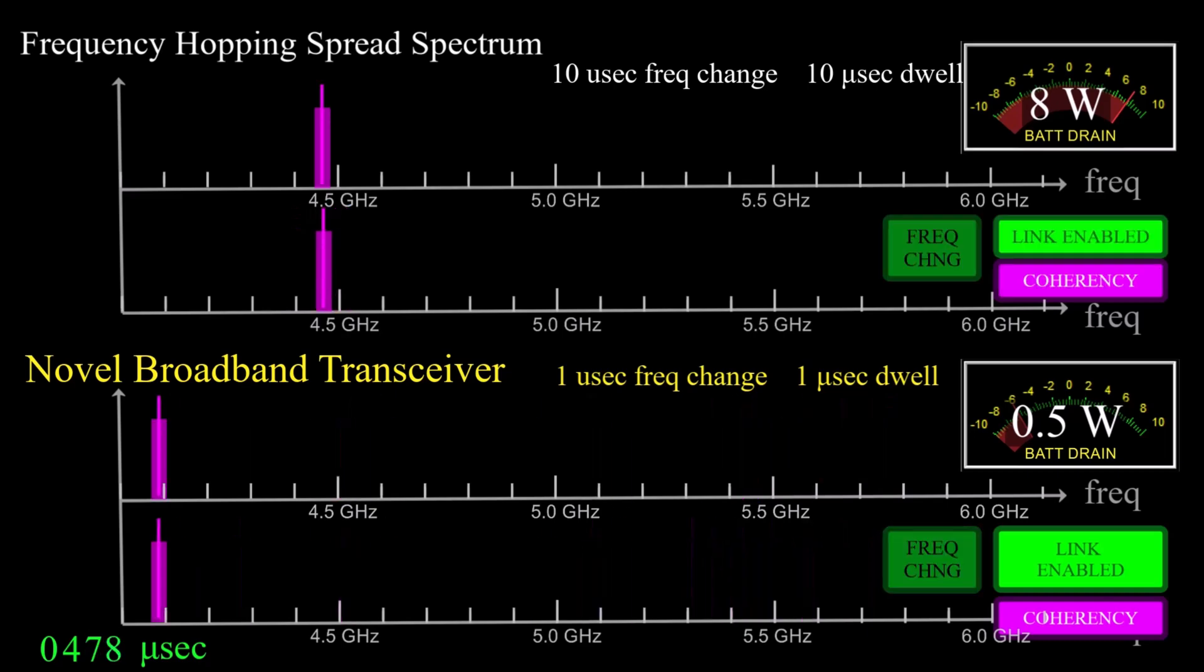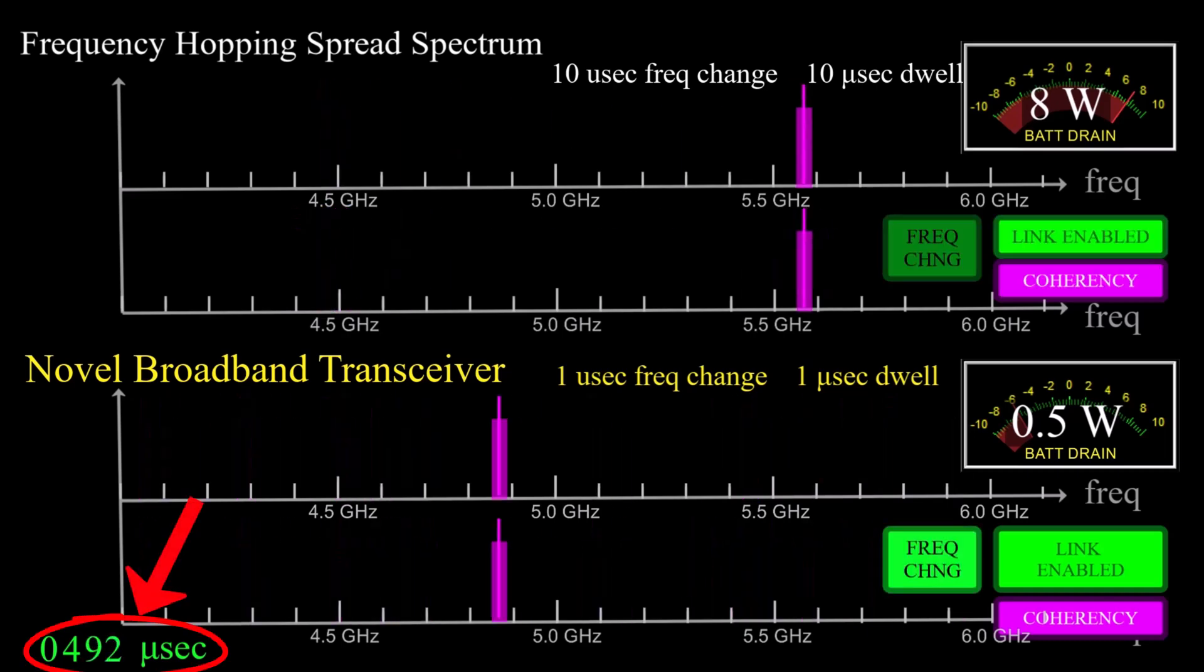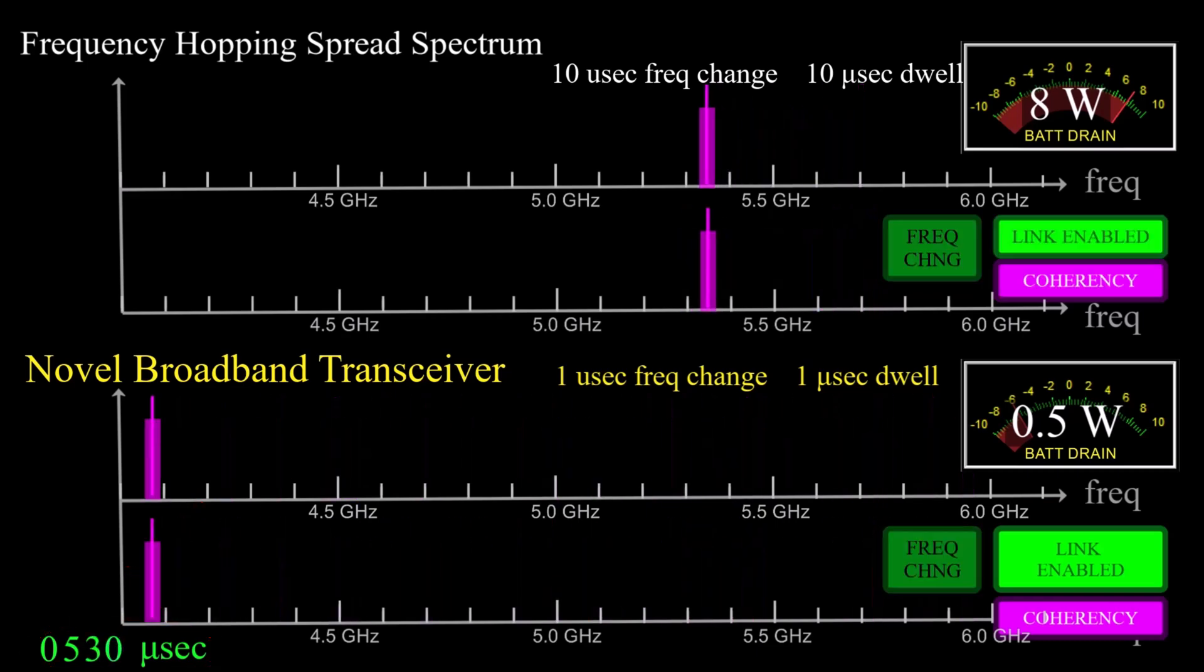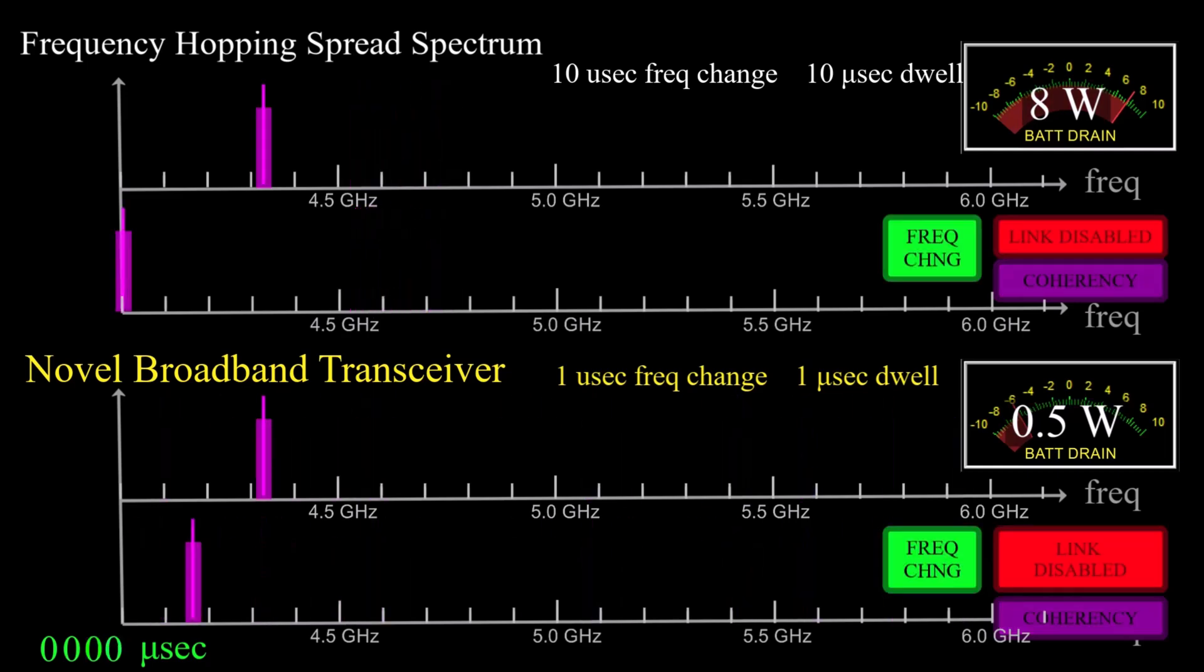The two displays, top and bottom, use the same time base. So for this configuration, the viewer can see the relative difference in frequency-hopping speed and the difference in the link duty cycle, like 50% compared to 100%.